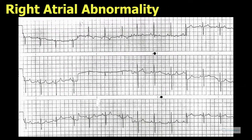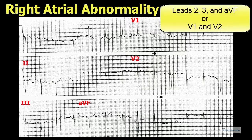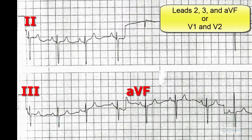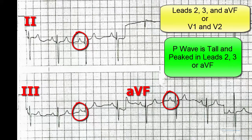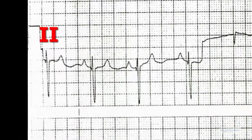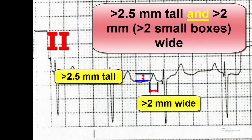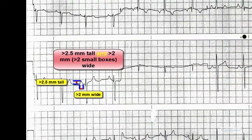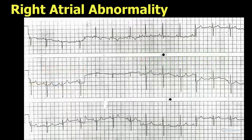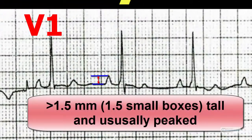Now let's look at the electrocardiographic changes of right atrial abnormality. To determine right atrial abnormality, we look in the inferior leads 2, 3, and AVF, or leads V1 and V2. In the inferior leads, the P waves will be tall and peaked like the top of a rocket ship. By criteria, it is 2.5 mm, or 2.5 boxes tall, and 2 mm, or 2 boxes wide. This was previously referred to as P pulmonale. In V1 or V2, the positive deflection of the P wave is greater than 1.5 mm, or 1.5 boxes tall, and is usually peaked.